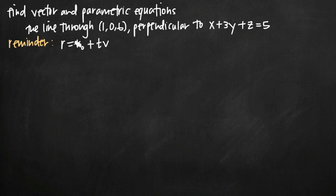The value of r that we get is going to give us the vector equation of the line. That's going to give us the first half of our problem, because we've been asked to find the vector equation of this line which passes through the point and is perpendicular to this plane.